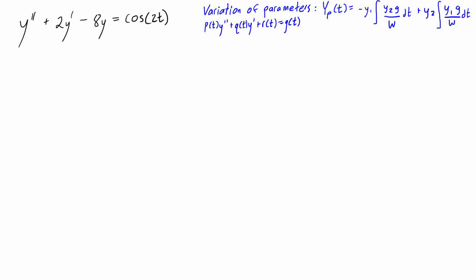So to get started, basically what we're doing here is we're looking for a particular solution. We're going to find that using this expression for y_p(t), but along the way we're also going to find the complementary solution. Then if we combine the complementary solution and the particular solution — basically add them together — we're going to have the general solution to the differential equation. So let's find the complementary solution first.